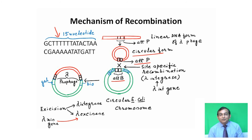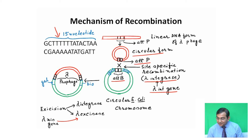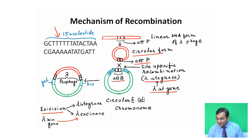This site-specific recombination is facilitated by an enzyme called lambda integrase. Lambda integrase is synthesized by the lambda INT gene. After formation of the prophage, the prophage is excised from the host chromosome. This excision process is facilitated by lambda integrase and lambda excisase. Lambda excisase is formed by the lambda XIS gene.